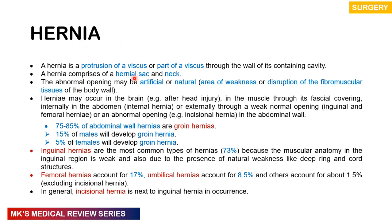The hernia is going to consist of a hernia sac as well as a neck. The abnormal opening may either be artificial or natural, meaning there is an area of weakness or disruption of the fibromuscular tissue. Hernias can occur pretty much everywhere in the body, but they are very common after head injury, through muscle or fascial coverings, especially internally in the abdomen — that's your internal hernia — or externally through a weak opening like inguinal and femoral hernias, or through an abnormal opening like an incisional hernia.